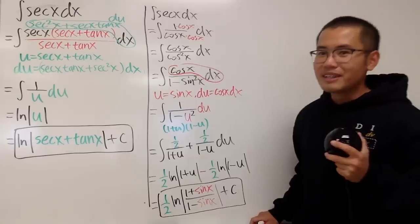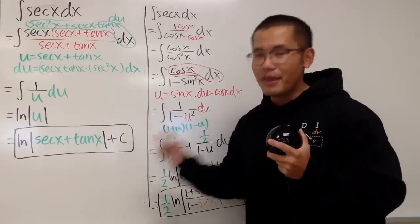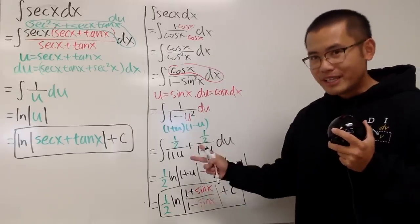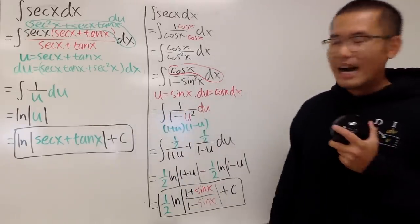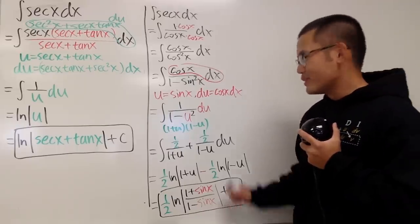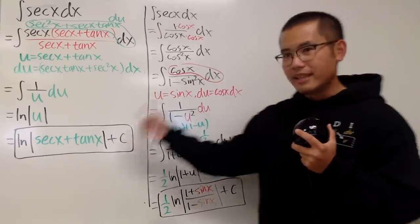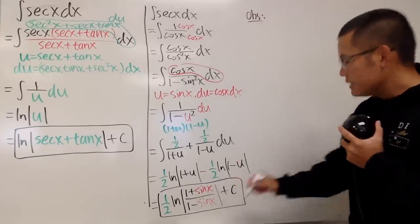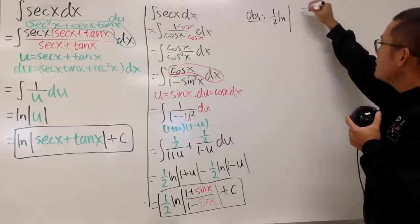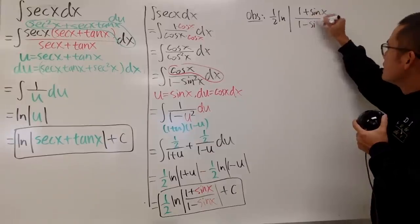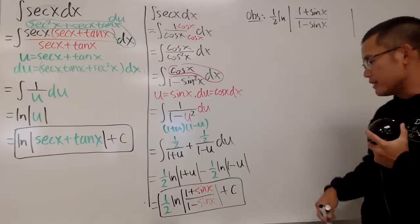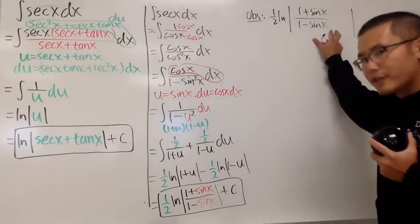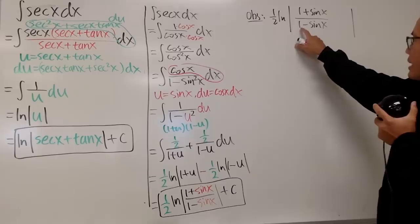Now I need to convince you that this is the same as the standard result. We have (1/2) ln|(1+sin x)/(1−sin x)|. To work with this, note that on the bottom we have 1 minus sin x to the first power, which isn't ideal. We'd prefer to have (1−sin x)² so we can use a nice identity. So let's multiply the top and bottom by (1+sin x).